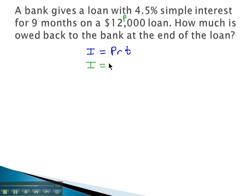P, the principal, the starting amount, is $12,000. R, the rate, is 4.5% as a decimal, 0.045.